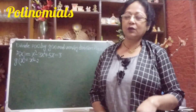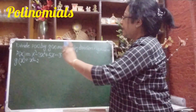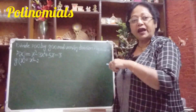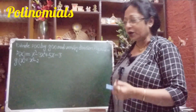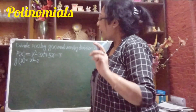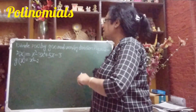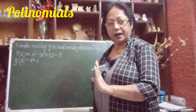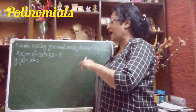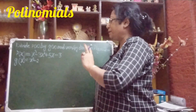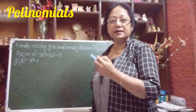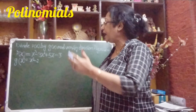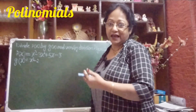Let us start. The question is: divide p(x) by g(x) and verify by the division algorithm. Our p(x) is x³ − 3x² + 5x − 3. This is our dividend. Our g(x), the divisor, is x² − 2.